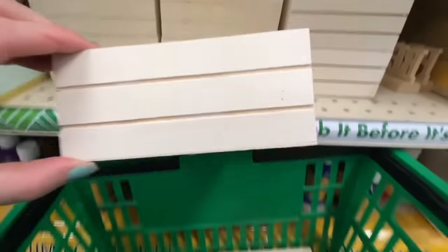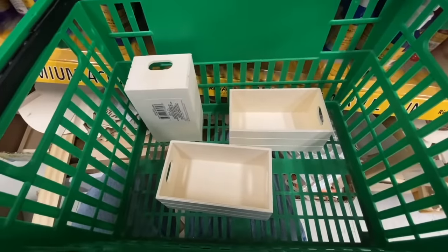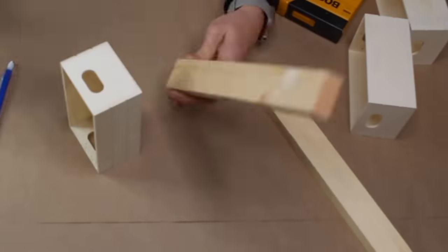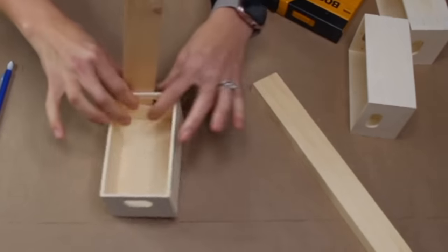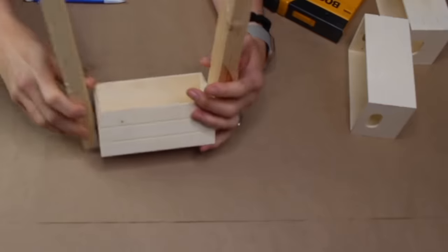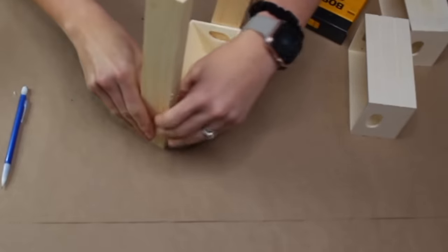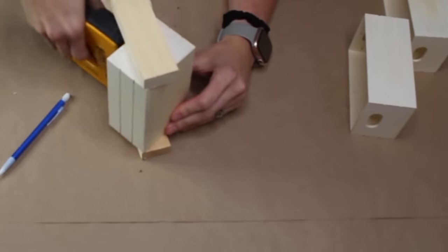To start this project, we're going to need three of these cute little craft storage bins. Use a pencil and line it up. Let that bond for a second. Secure the other side with the glue and then go back in with our staple gun to make sure it's reinforced.